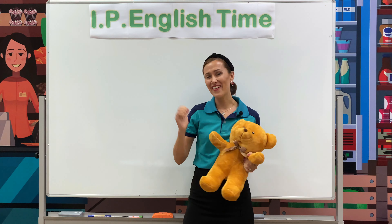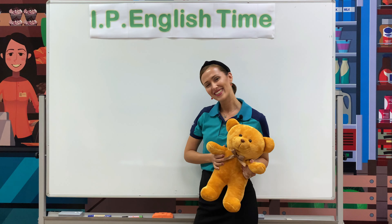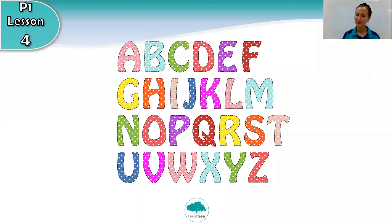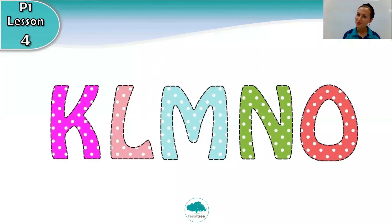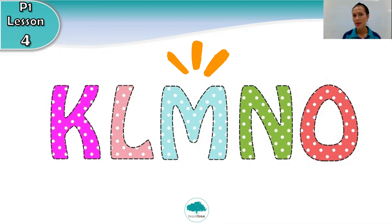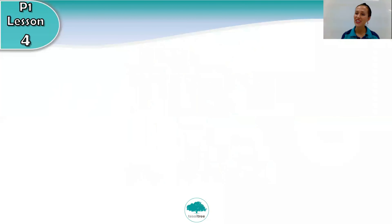Yay! Very good! Okay, P1, let's start this alphabet lesson. As you can see, this is the alphabet. In today's lesson, lesson 4, we will do the letters K, L, M, N, and O. Are you ready? Let's start.